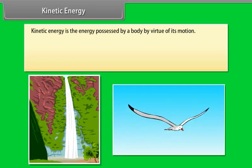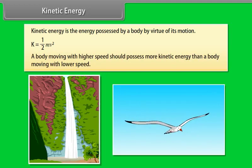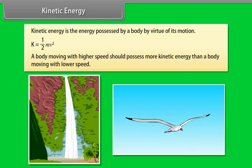Kinetic energy. Kinetic energy is the energy possessed by a body by virtue of its motion. Kinetic energy equals half mv square. Running water, flying bird are few examples of bodies possessing kinetic energy. It is logical that a body moving with a higher speed should possess more kinetic energy than a body moving with lower speed.